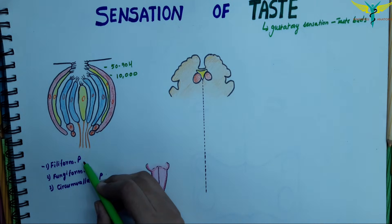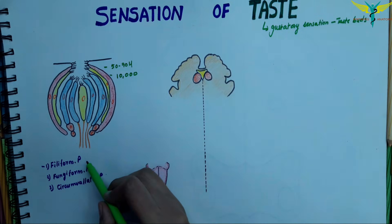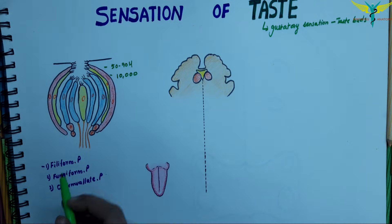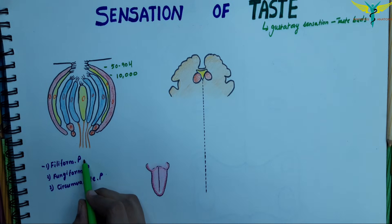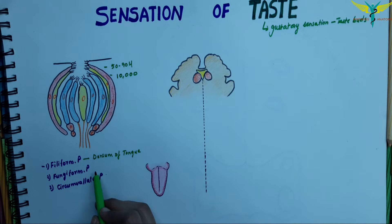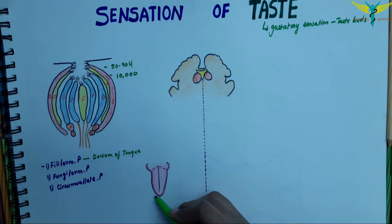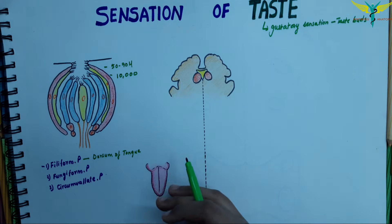Filiform papillae are small and conical shaped, situated over the dorsum of the tongue, and contain very few taste buds. Fungiform papillae are round in shape, situated over the anterior surface of the tongue near the tip, and each papilla contains a moderate number of taste buds.